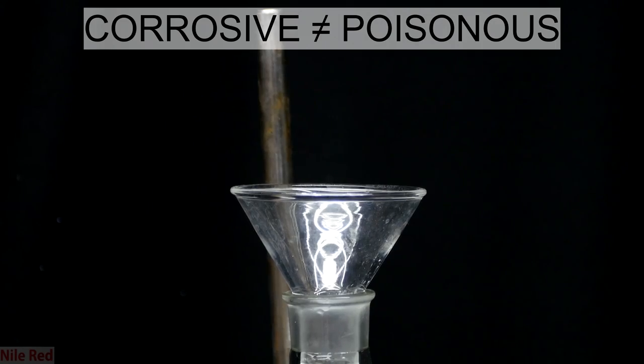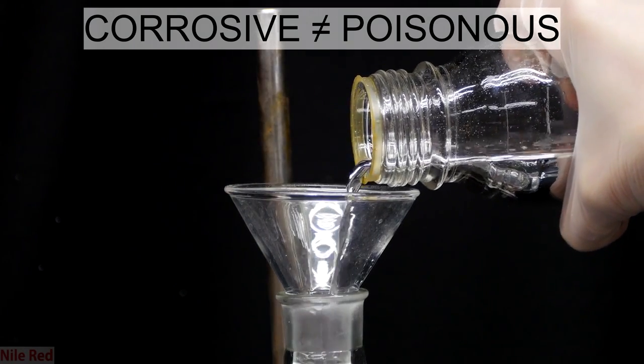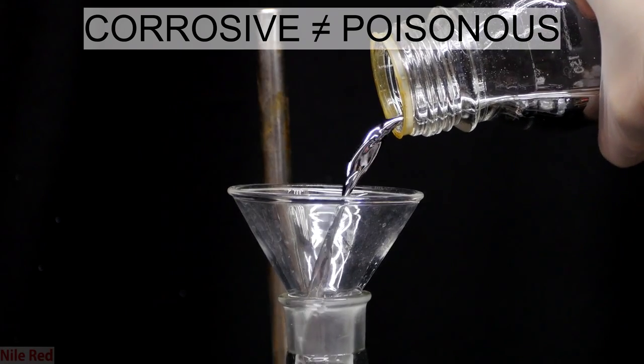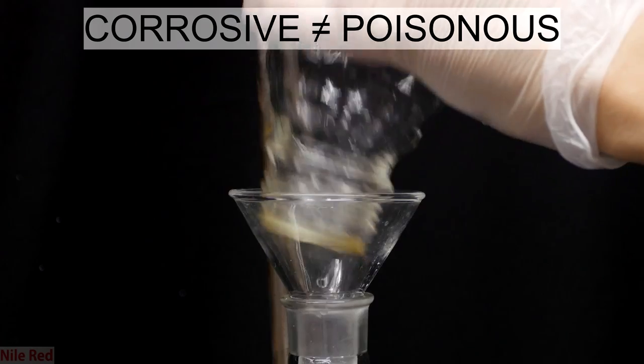Before we start, I really want to have a disclaimer and state there's a very big difference between corrosive chemicals and poisonous chemicals. The acids that I've chosen, and a lot of other acids in general, are simply corrosive and they're not poisonous.